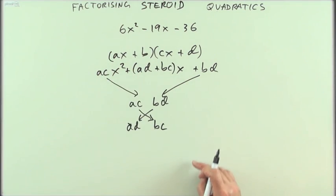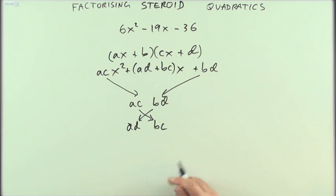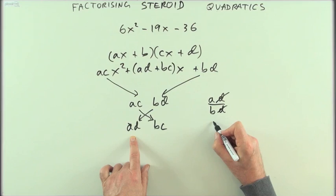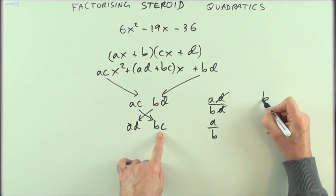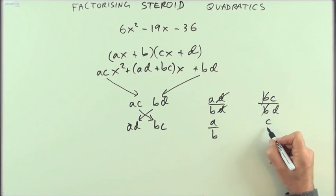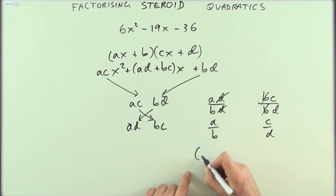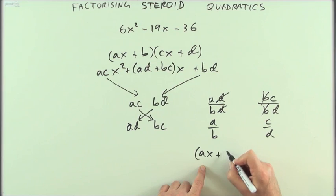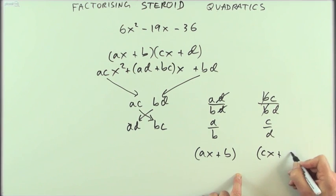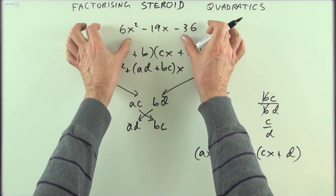Once I've interchanged the factors to get ad and bc, I can separate them out by dividing by the end term. ad divided by bd leaves the ratio a:b; bc divided by bd cancels the b's, leaving ratio c:d. Those ratios then form the two brackets: a and b separate into (ax + b), and c and d separate into (cx + d) — signs are sorted afterward. That's the pattern for factorizing quadratics with much larger numbers.